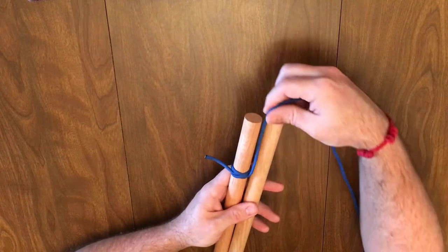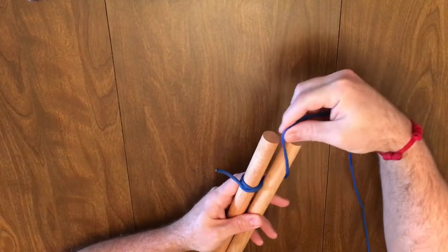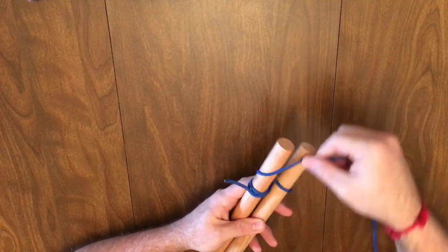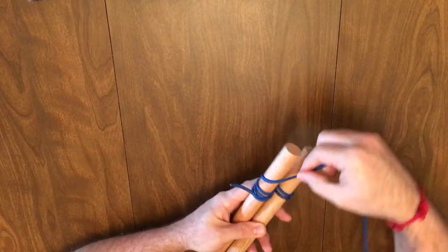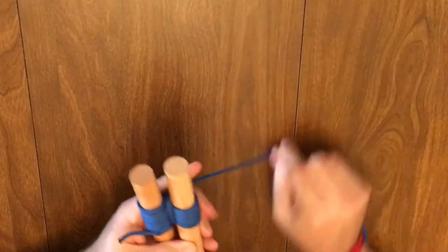But instead of just wrapping the two poles, weave in and out, creating a figure of eight pattern. Finish the same way with your frapping turns and clove hitch.